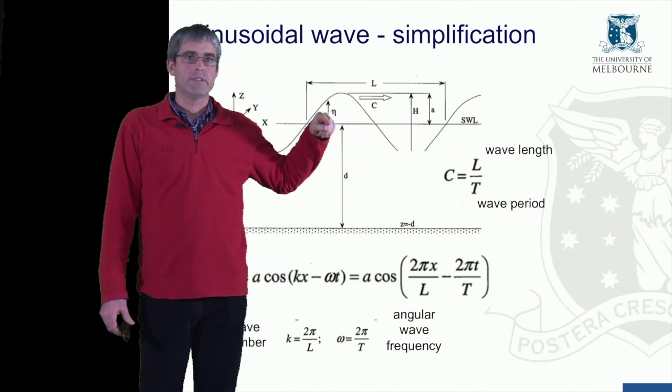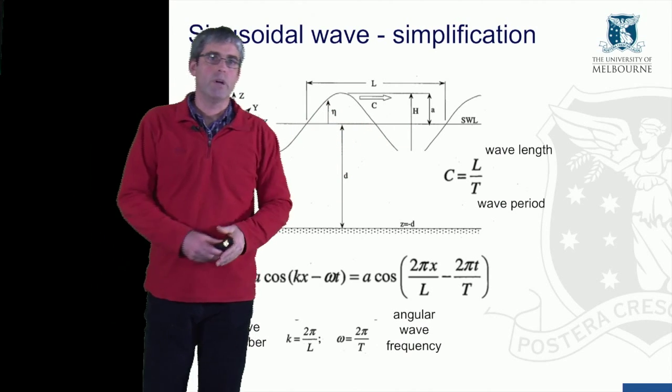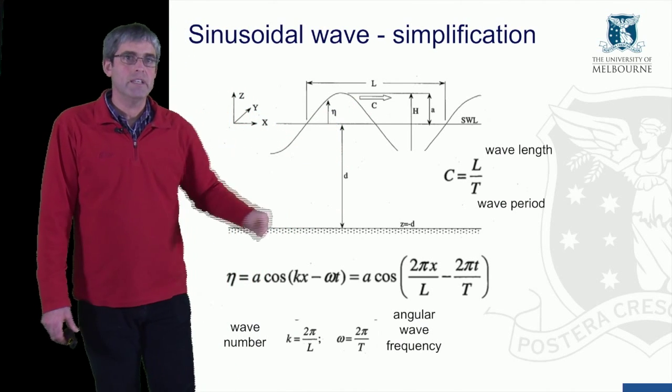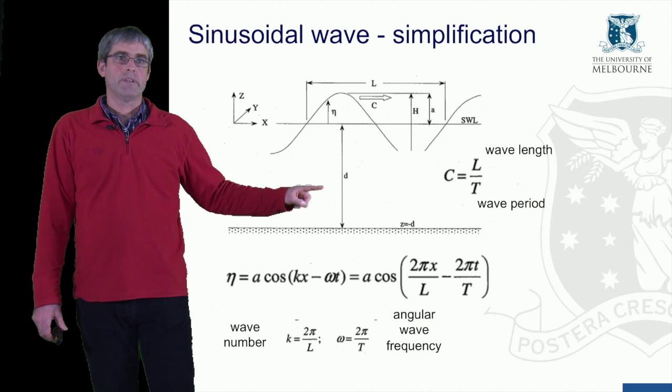For a sinusoidal wave, the still water level is at half the wave amplitude. And then we've got the celerity C and the water depth D.